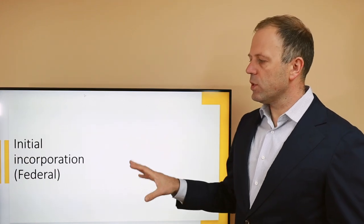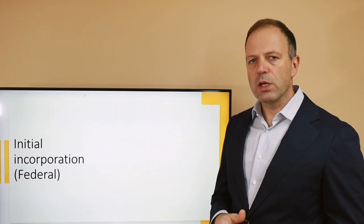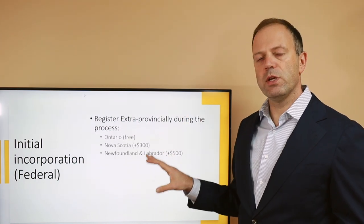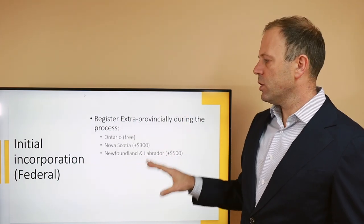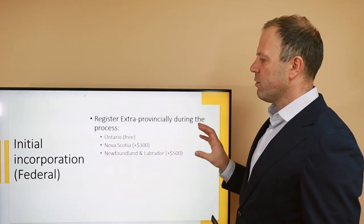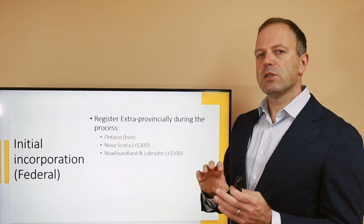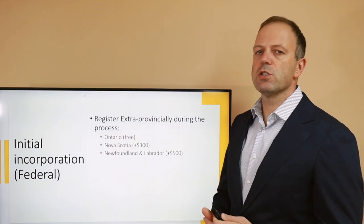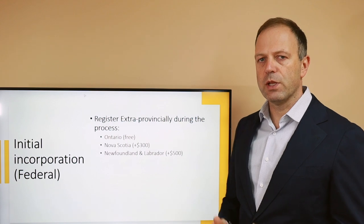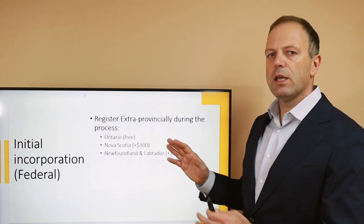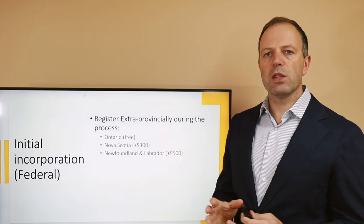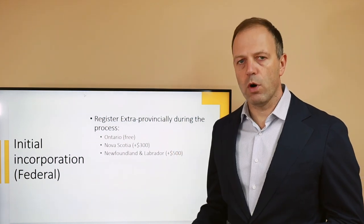When we do the initial federal incorporation, we are offered to register our company in three provinces: Ontario, Nova Scotia, and Newfoundland and Labrador. These provide a very easy, straightforward, smooth process as part of the initial federal incorporation. Ontario registration is even free; the other provinces require their own fees, but you do it together with your incorporation and move on.